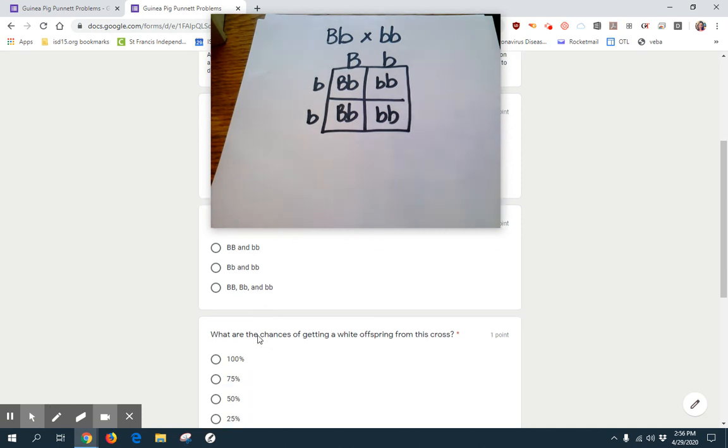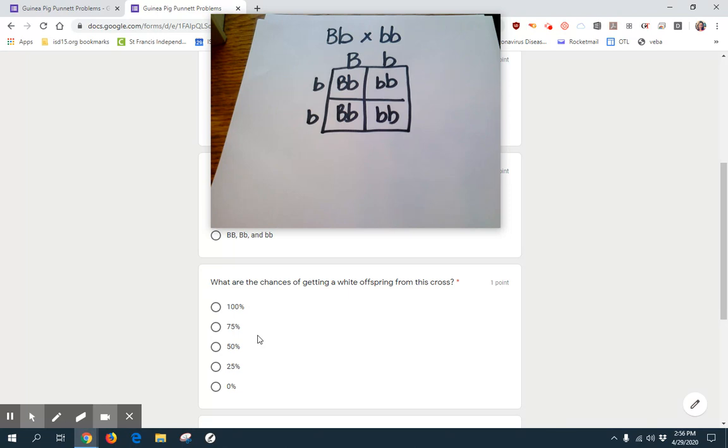What are the chances of getting a white offspring from this cross? Well, we got a two out of four chance. Two out of four of them have a chance of being white. So probably get about 50% white offspring from this cross.